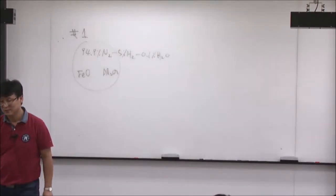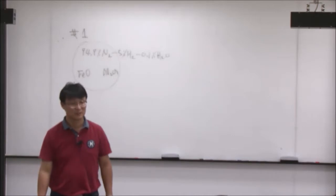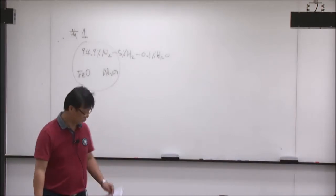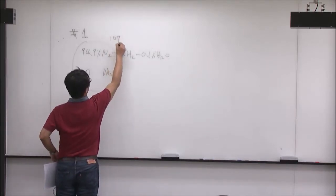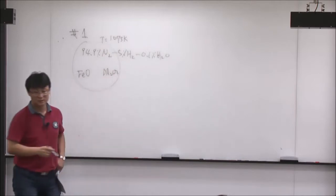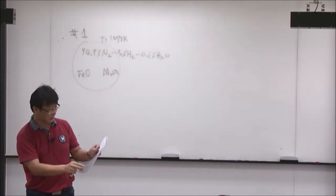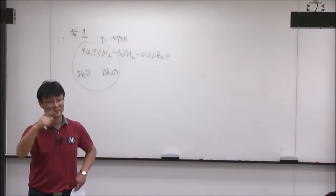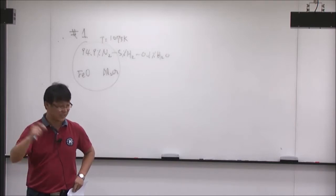800 degrees Celsius — some of you actually say that 800 degrees Celsius is 1073 Kelvin, yeah. But in the next question where I say 700 degrees, you write 1073 instead of 973.